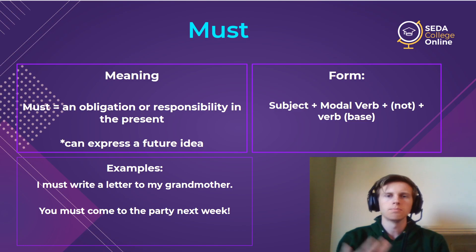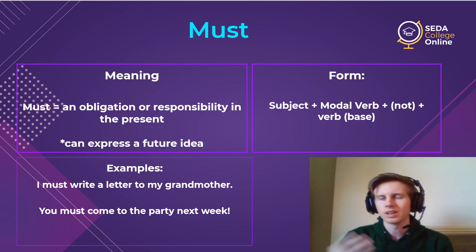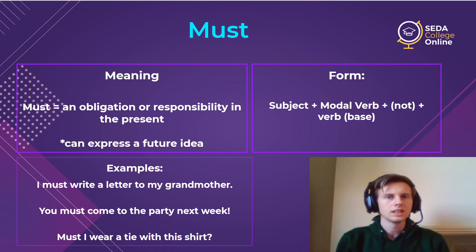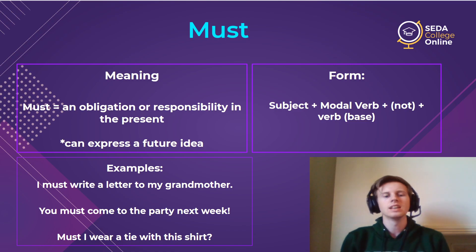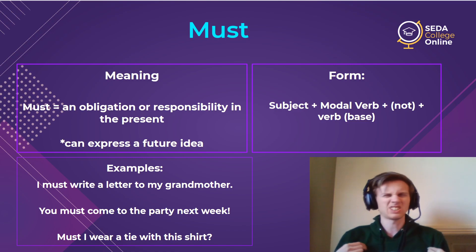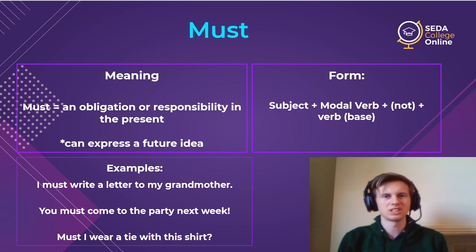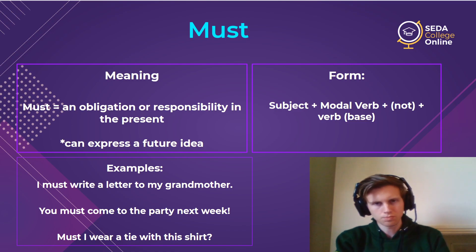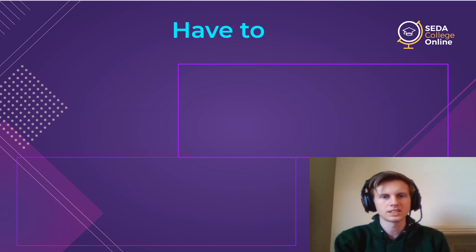Here are some examples. The first is: 'I must write a letter to my grandmother.' There I think it's a personal obligation — maybe my grandmother sent me a birthday card and I should say thank you. Or: 'You must come to the party next week.' Here the obligation is present — right now I say you must come — but the party is next week, so there is a connection from present to future. That's what I mean by expressing a future idea. We can also make a question: 'Must I wear a tie with this shirt?' We just swap the modal verb and the subject. That's everything for must — pure, straight obligation.